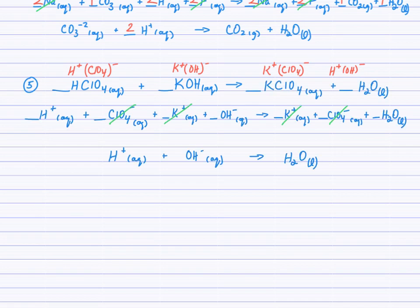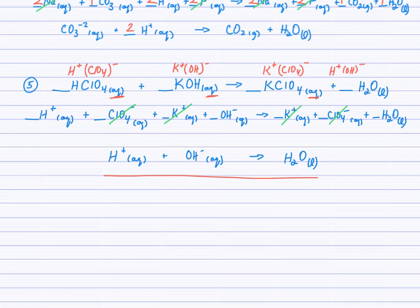For the last example: perchloric acid and potassium hydroxide react in a double displacement to form potassium perchlorate and water. Writing the total ionic equation, I dissociate only the aqueous compounds — water is not dissociated and is copied down exactly. Potassium and perchlorate are the spectator ions and are cancelled, leaving the hydrogen ion and hydroxide ion forming water. This gets at the heart of a neutralization reaction: H⁺ from the acid and OH⁻ from the base combine one to one to form liquid water.